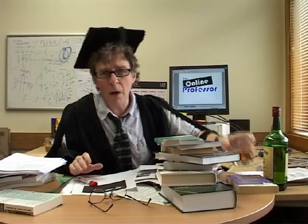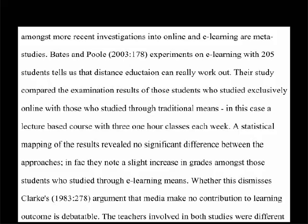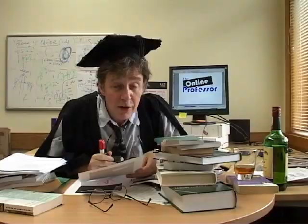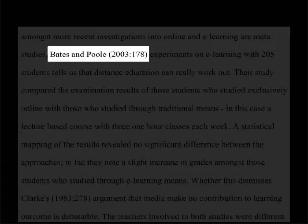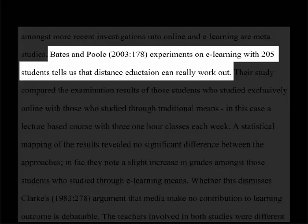Let's have a look at another one. Here's one that starts off: Bates and Poole, 2003, page 178. This isn't bad already — we've got a page number and a modern reference. The essay carries on: 'Bates and Poole's experiments on e-learning with 205 students tells us that distance education can really work out.'